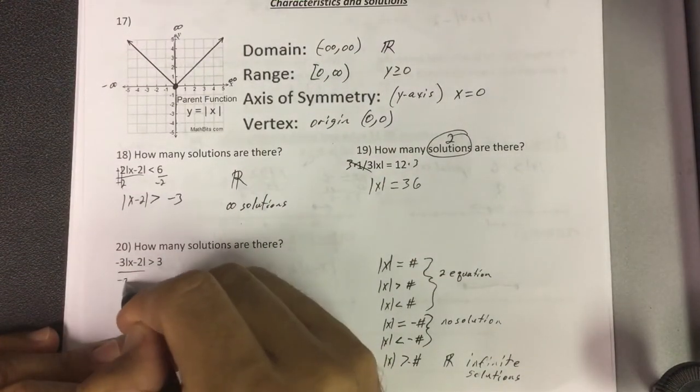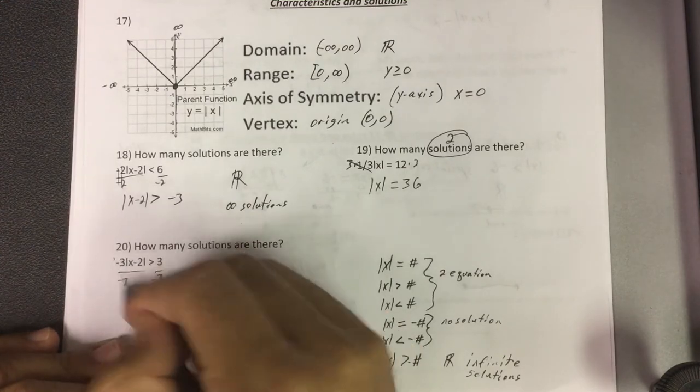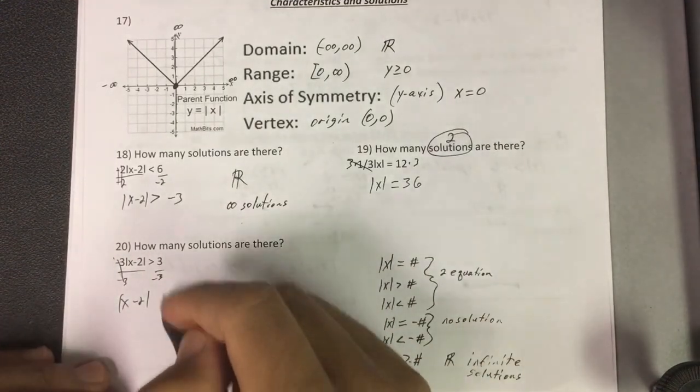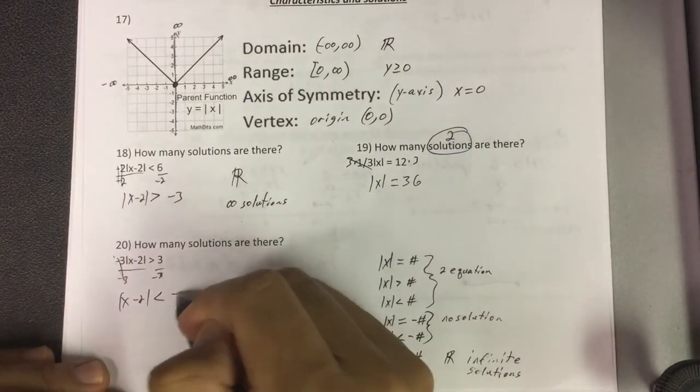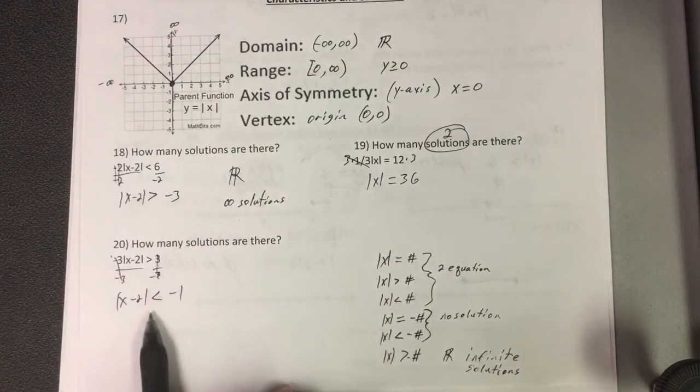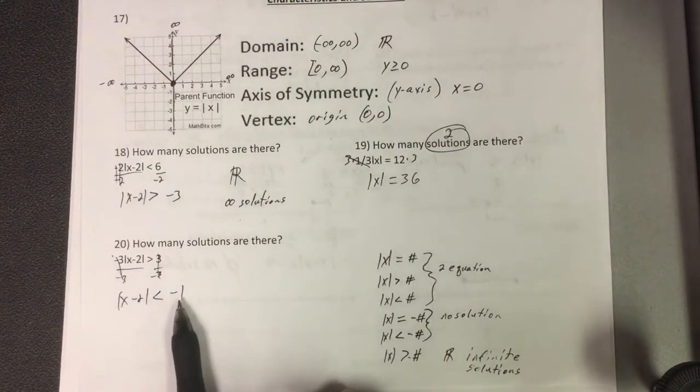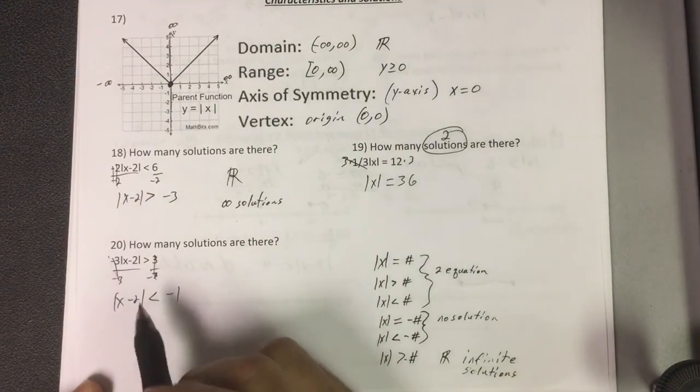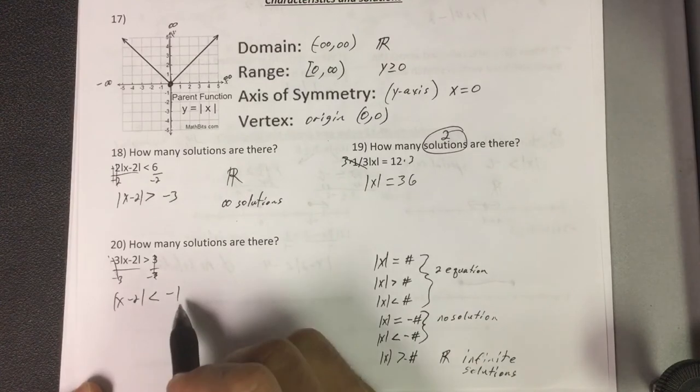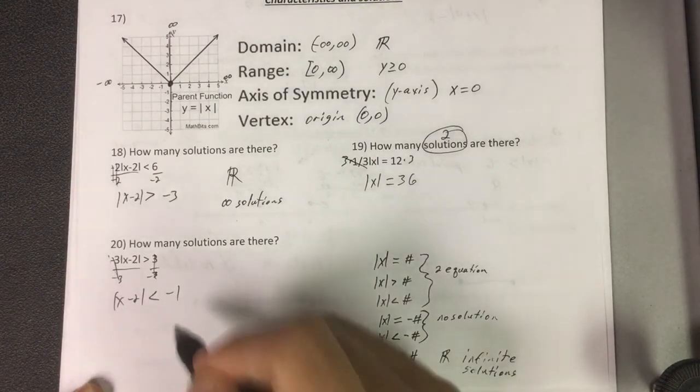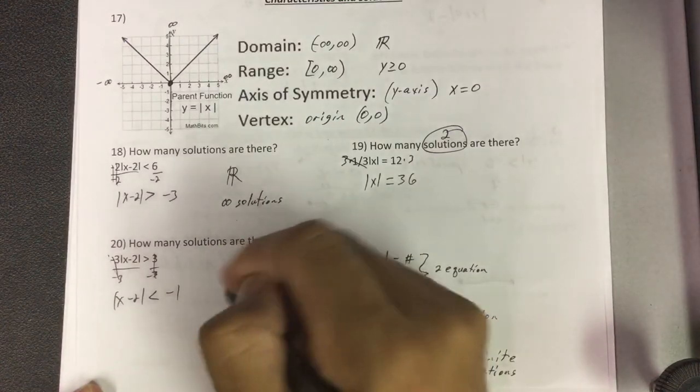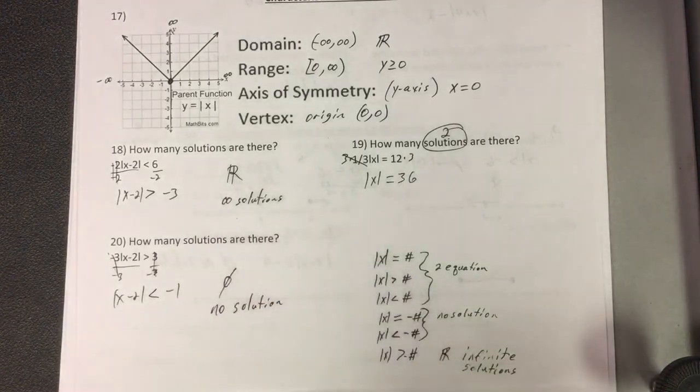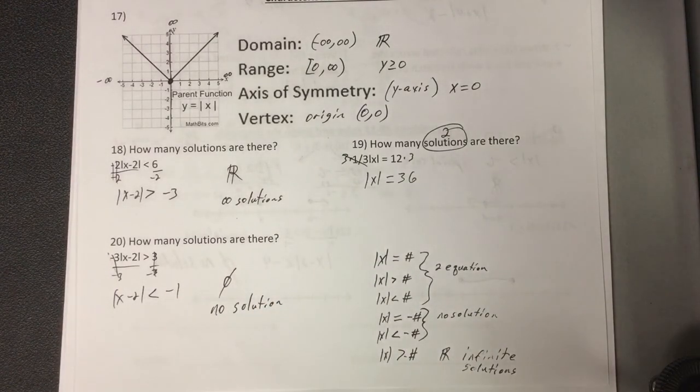This one, when I divide by negative 3, divide by negative 3, all that cancels and we get x minus 2. This sign needs to change and we get negative 1 on this side. So when is this less than a negative number? Well, it can't be. This is going to make it a positive answer no matter what. So really the smallest number we can get is 0 and that's still bigger than negative 1. So that tells me right now that this is no solution. Work on the word problems.